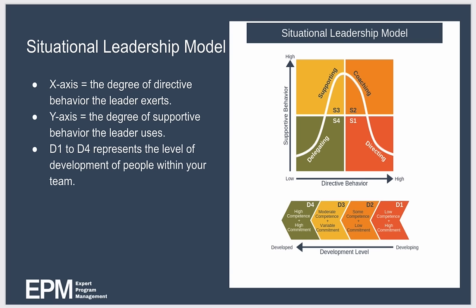In the model, the x-axis indicates the degree of directive behavior that the leader exerts — the amount of direction they give their team. The higher the direction, the less able the team is to make decisions for themselves. The y-axis indicates the degree of supportive behavior the leader uses — the amount of support they give their team. The higher the support, the more the leader helps their team to make decisions and perform their role.